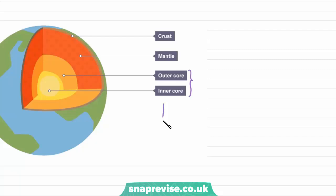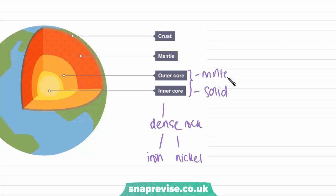Starting with the core, the core is made of dense rock, and these include iron and nickel. The inner core is solid, but the outer core is actually more molten. This means that the rock has been heated up high enough because there are really, really high temperatures in the core, which means the rock becomes a liquid state. The temperature of the core is more than 5,000 degrees Celsius.